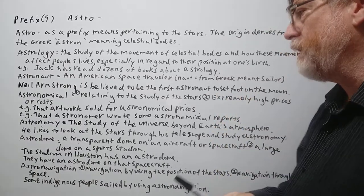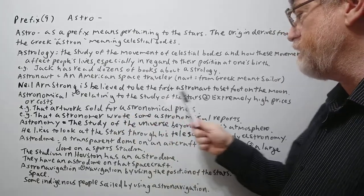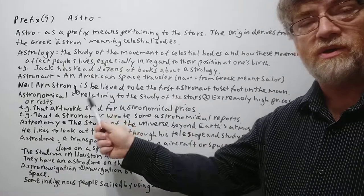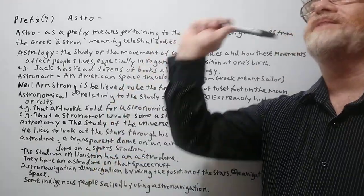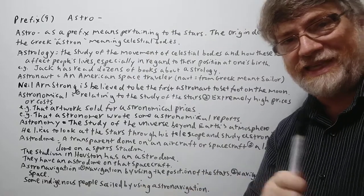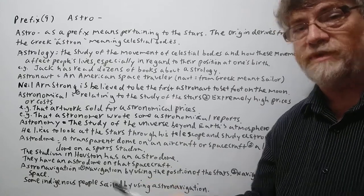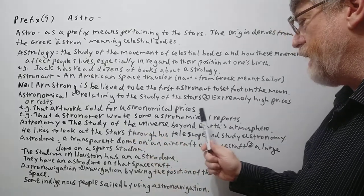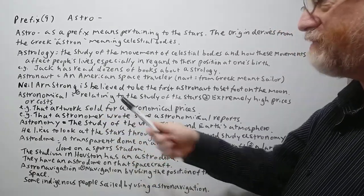Astronomical. Now we've got two meanings here. One, it's kind of an adjective of astronomy, meaning relating to the study of the stars, or extremely high prices or costs. We use it a lot for that one too. Meaning the costs are so high, it's like they're reaching the stars. That's the idea behind that. So that artwork sold for astronomical prices. And the second one, that astronomer wrote some astronomical reports. Remember astronomer is a scientist of astronomy.